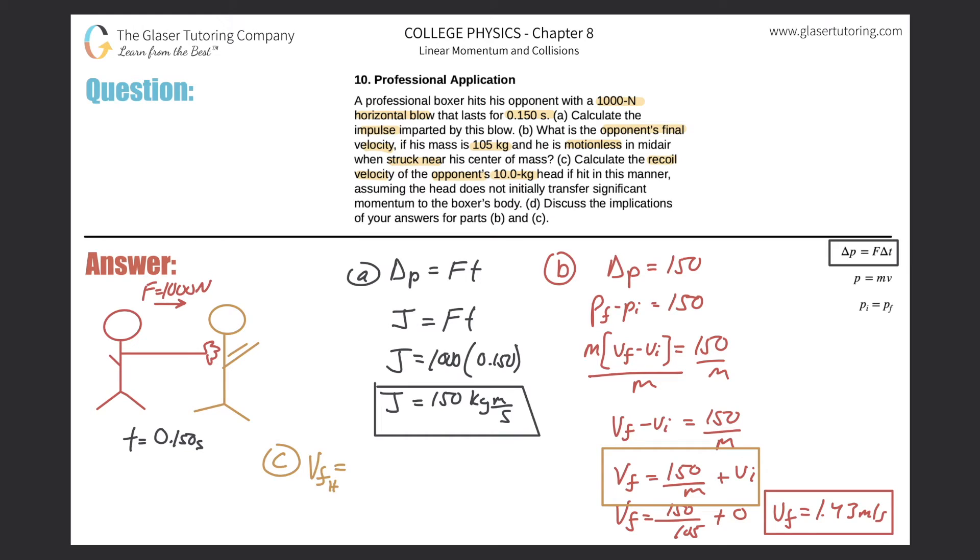I'll put a little sub h down there. It's equal to 150, that was the impulse, divided by the mass of the head. The mass of the head is 10 kilograms, so divide by 10, then plus the initial velocity of the head. But remember that was zero. His body was zero and his head is zero. So now we realize that just calculating this, this should simply be 15 meters per second.